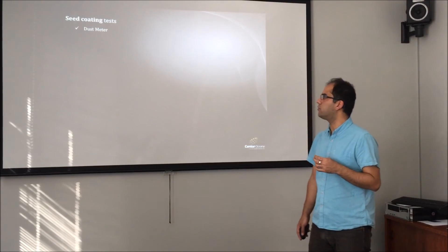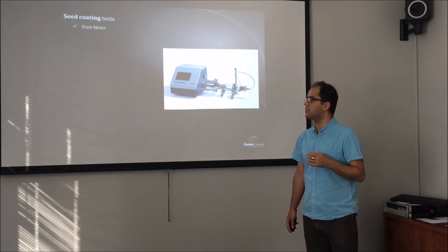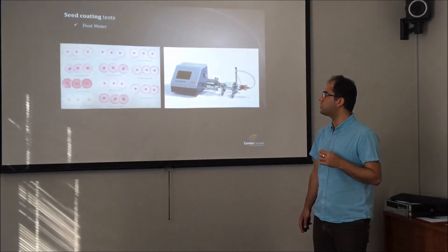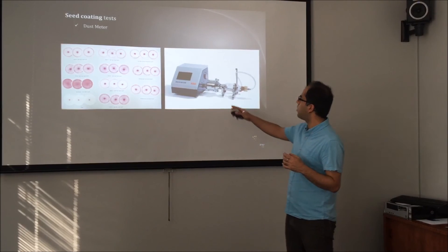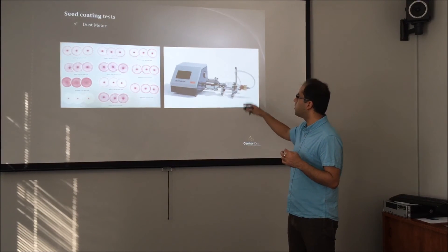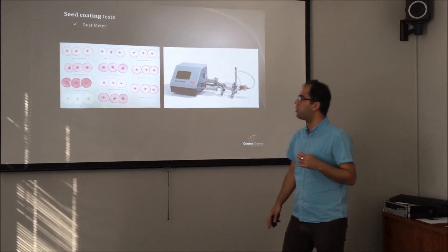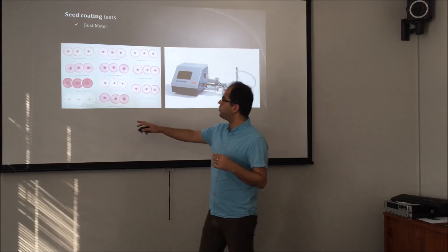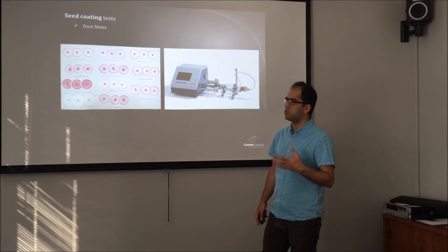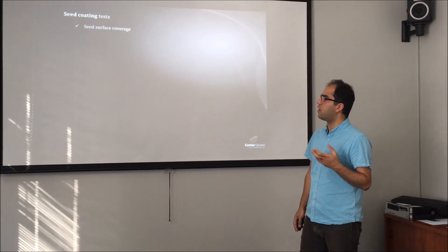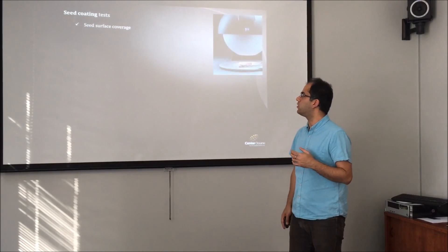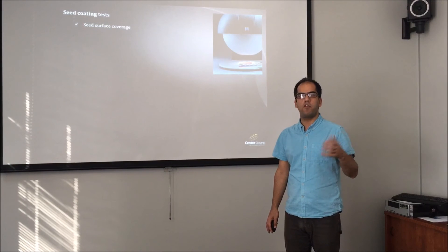The second test is dust measurement. A Heubach dust meter is used as the standard for measuring the dust level of coated seeds. The coated seeds go through a drum where they are circulated — a simulation of actual handling conditions. Dust comes off the seeds and is accumulated onto filter paper, and then the amount of dust is measured. Some filter papers collect much more dust showing high dust levels, while others show low dust.